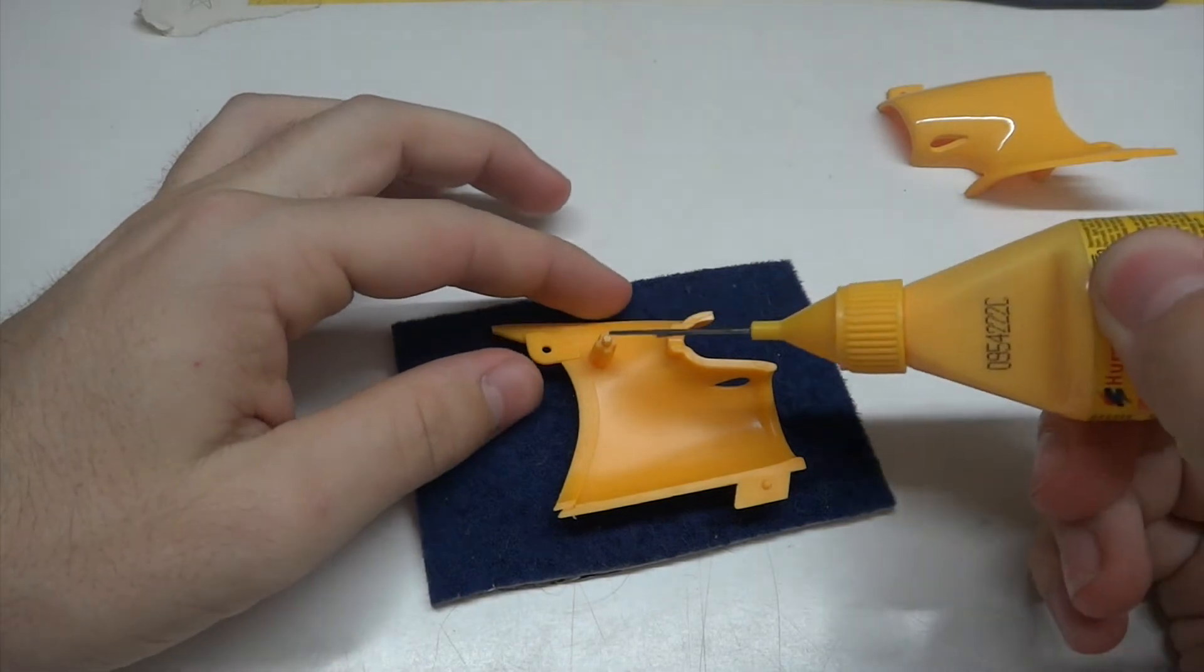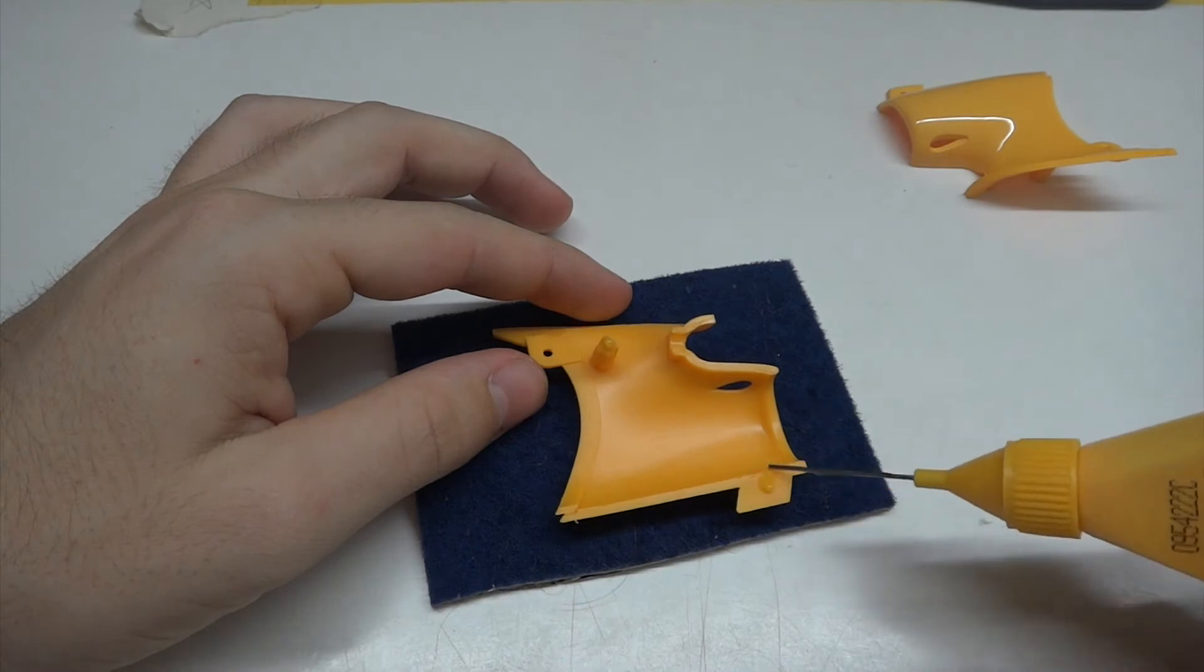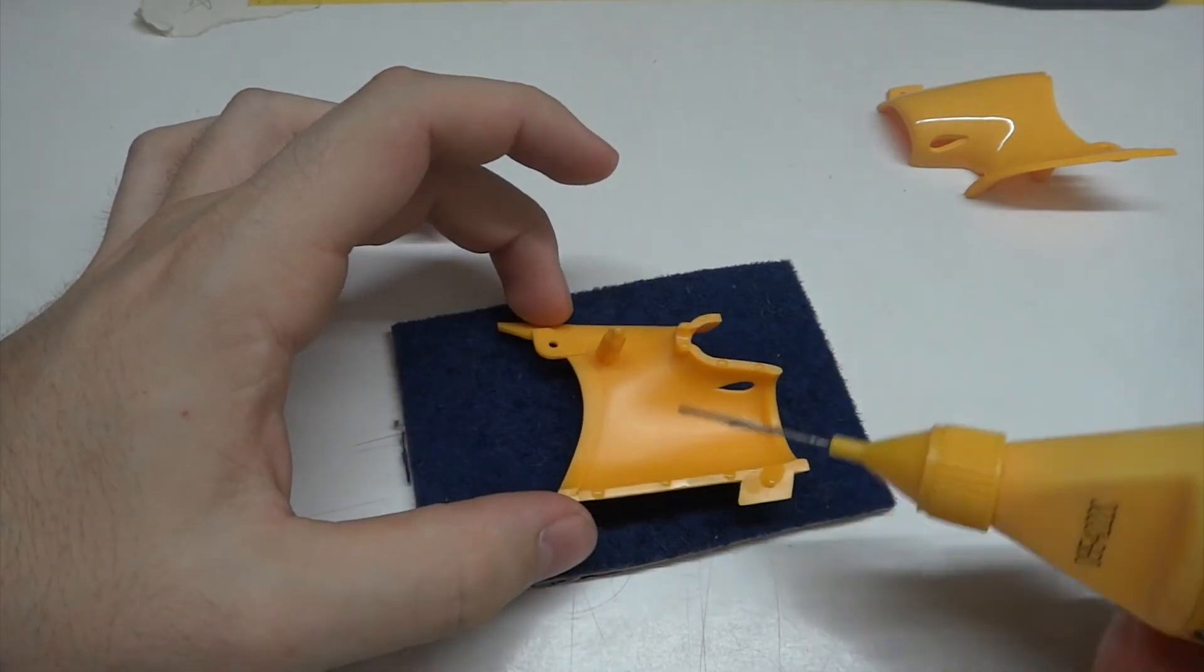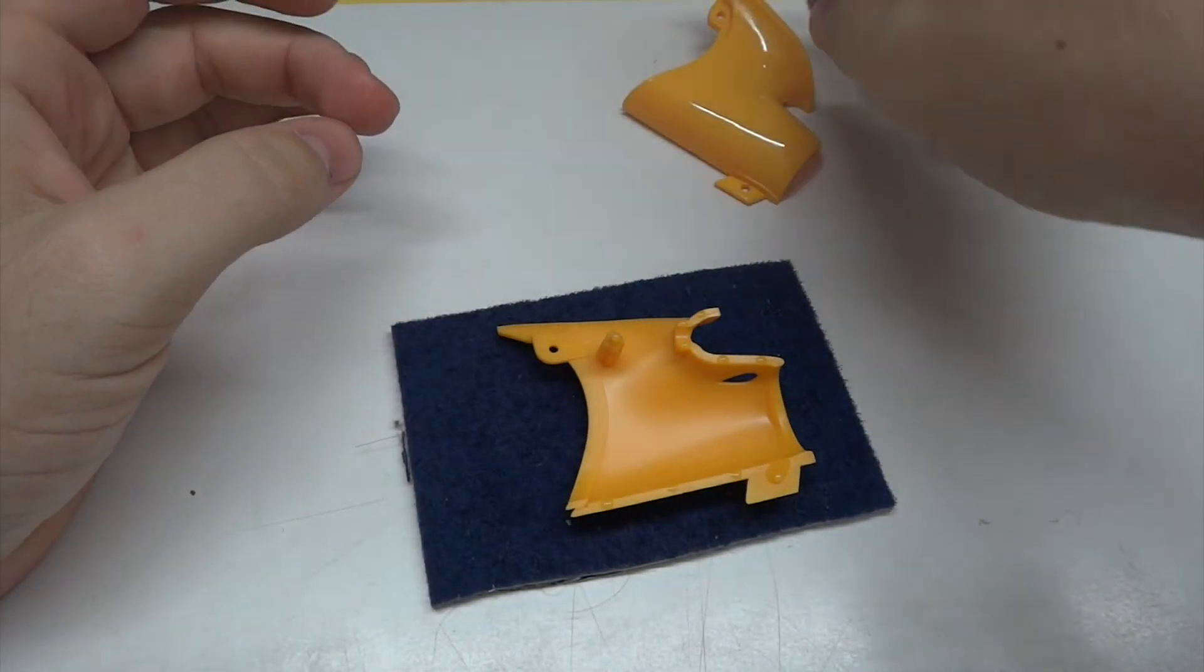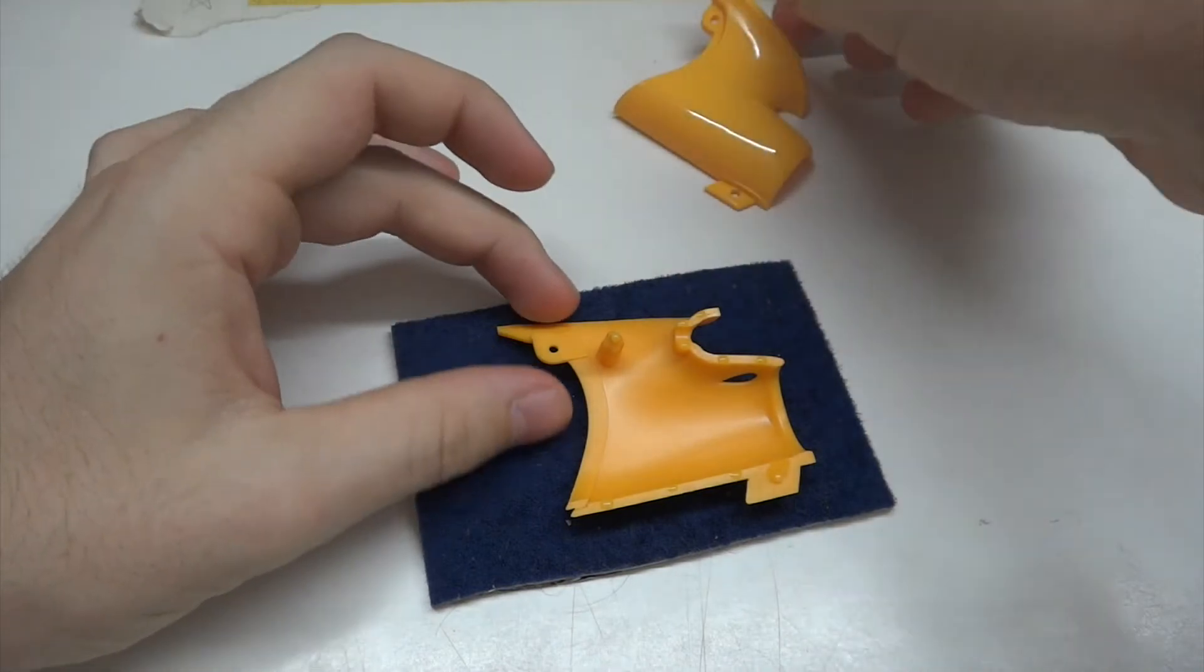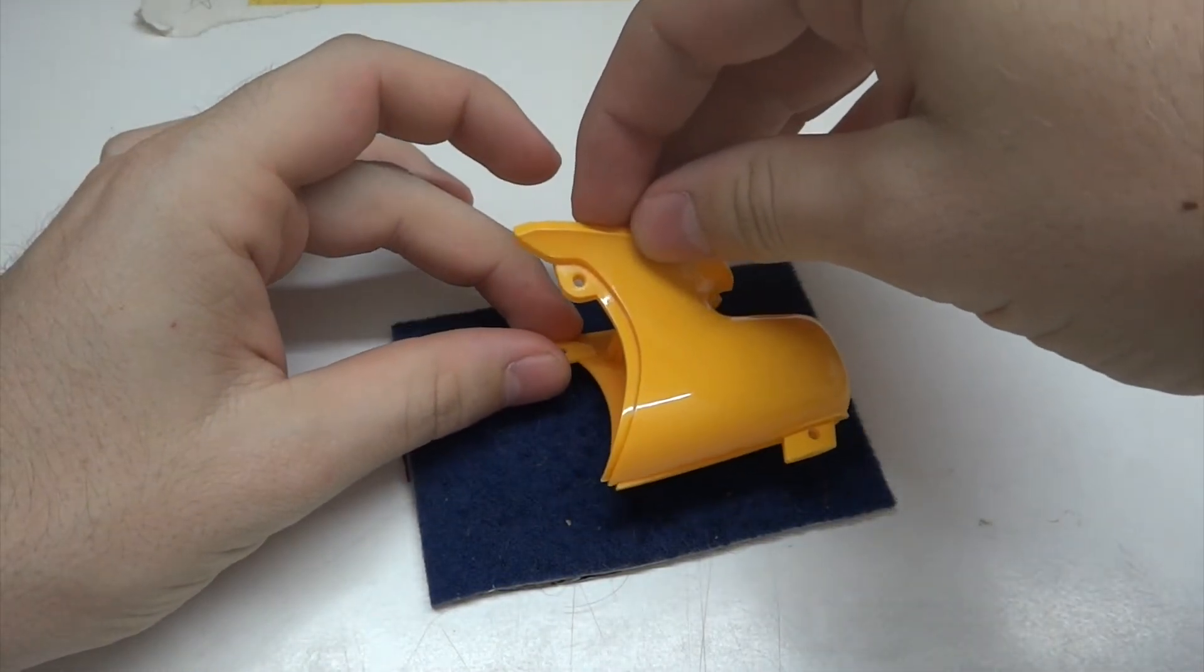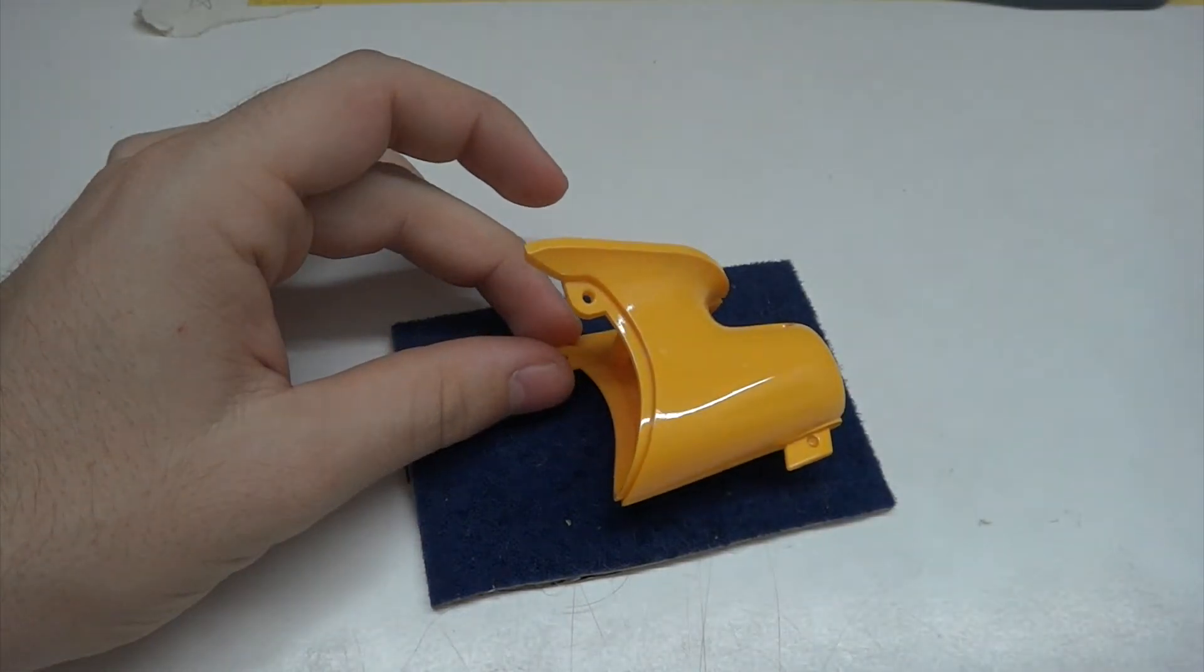We're just going to apply a little bit of glue here. Once you do that, grab the other side of your induction pod and carefully bring the two halves together.